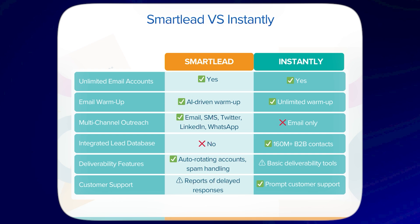For unlimited email accounts, both tools have it. For email warm-up, SmartLead has AI-driven warm-up while Instantly has unlimited warm-ups. For multi-channel outreach, SmartLead offers email, SMS, Twitter, LinkedIn, and WhatsApp, while Instantly only offers email. For the integrated lead database, SmartLead doesn't have it, while Instantly has 160 million-plus B2B contacts. For deliverability features, SmartLead offers auto-rotating accounts and spam handling, while Instantly offers basic deliverability tools. For customer support, some users report delayed responses for SmartLead, while Instantly has good reviews on their customer support.